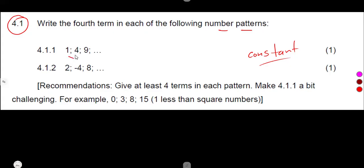Let's find the difference. 4 minus 1 is 3. Then 9 minus 4 — there's a difference of 5. If we check, the difference is not the same.